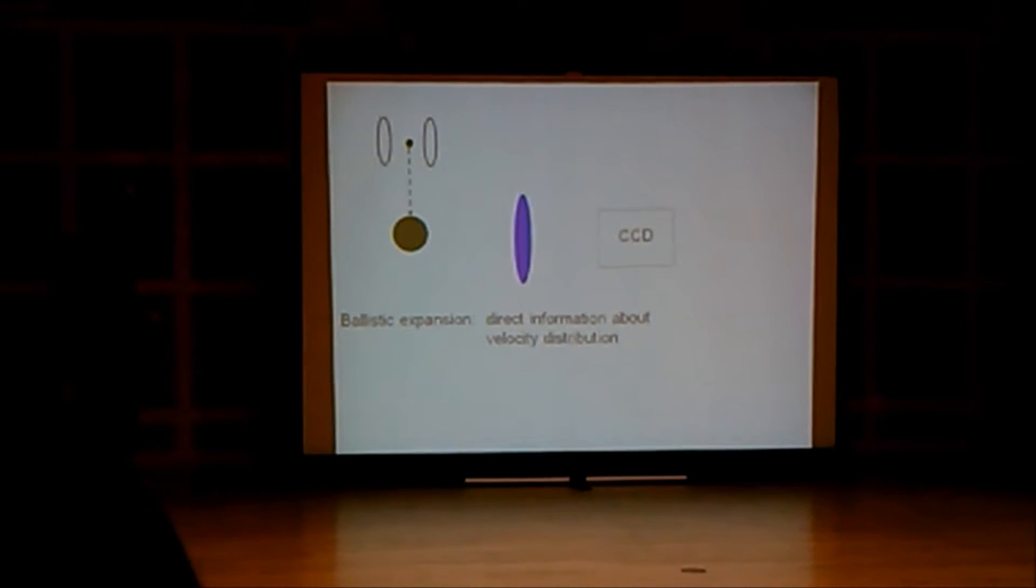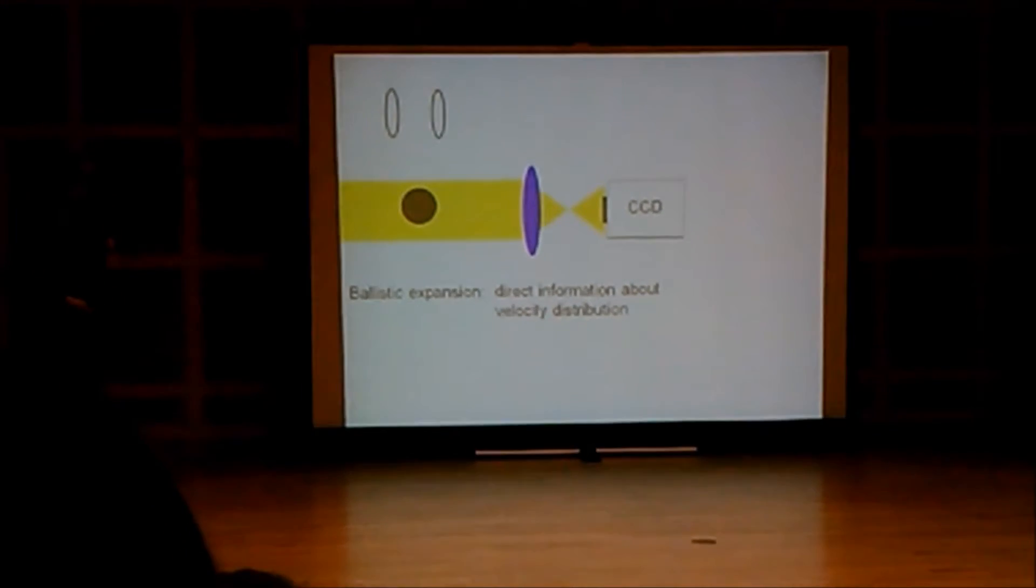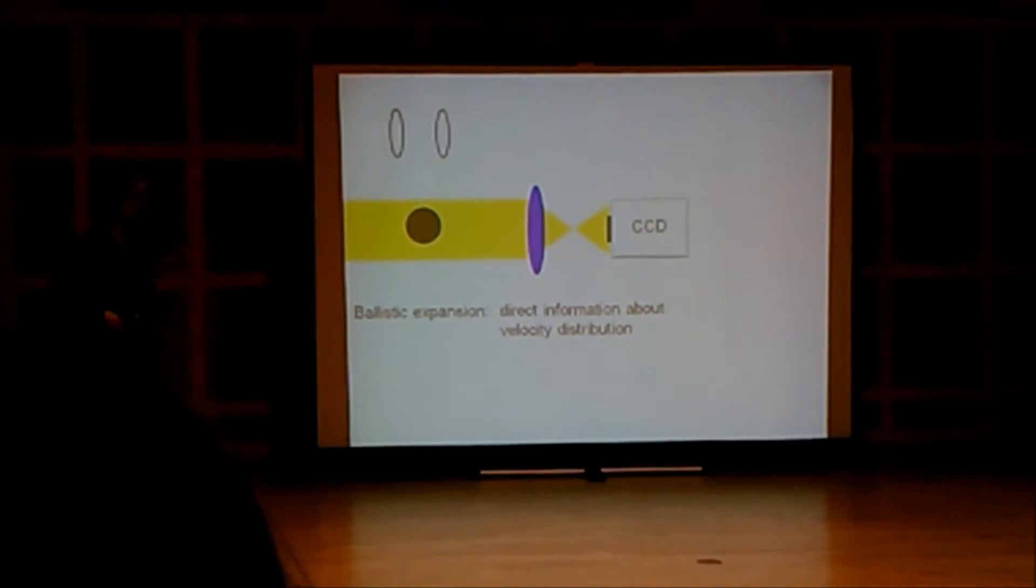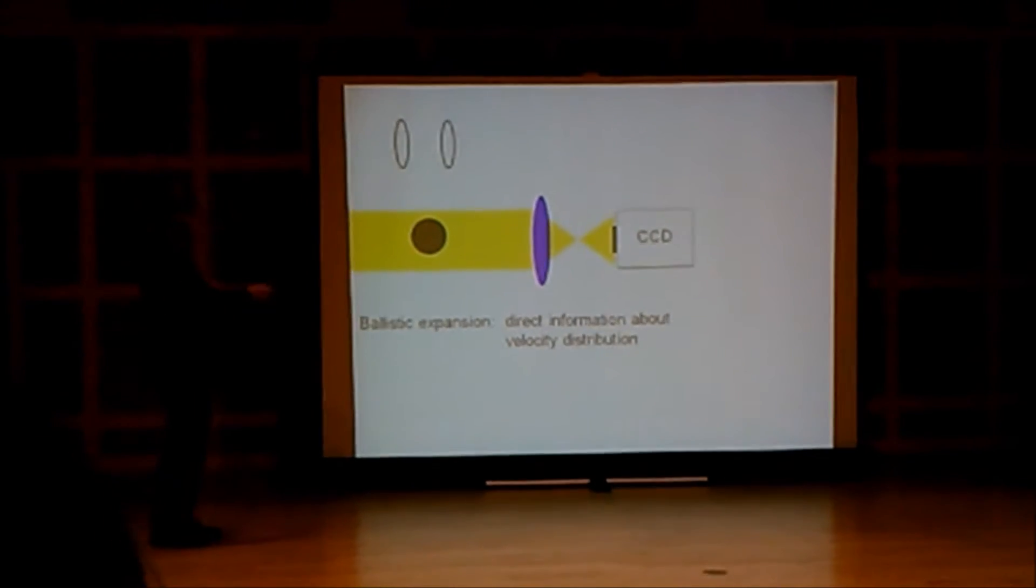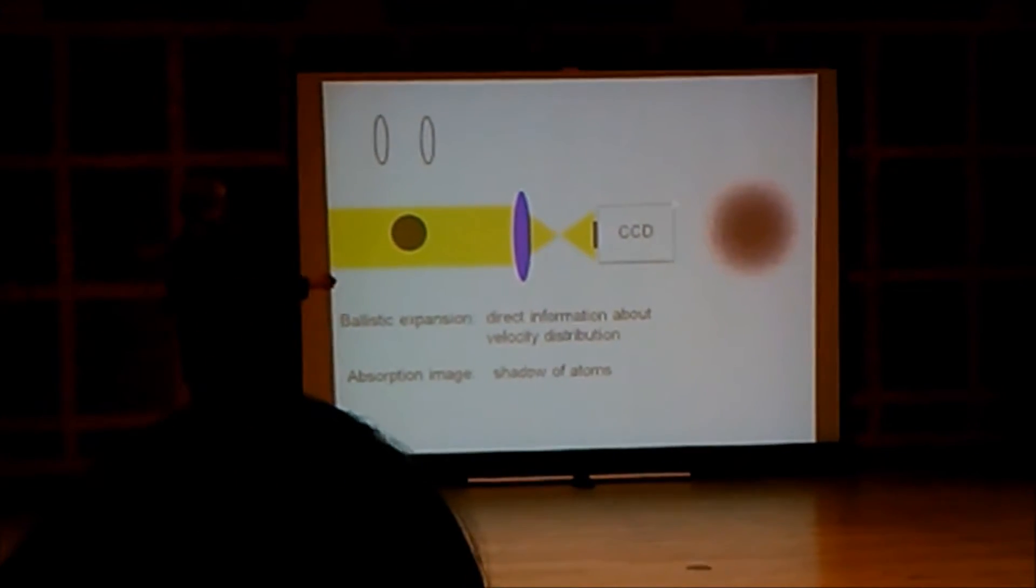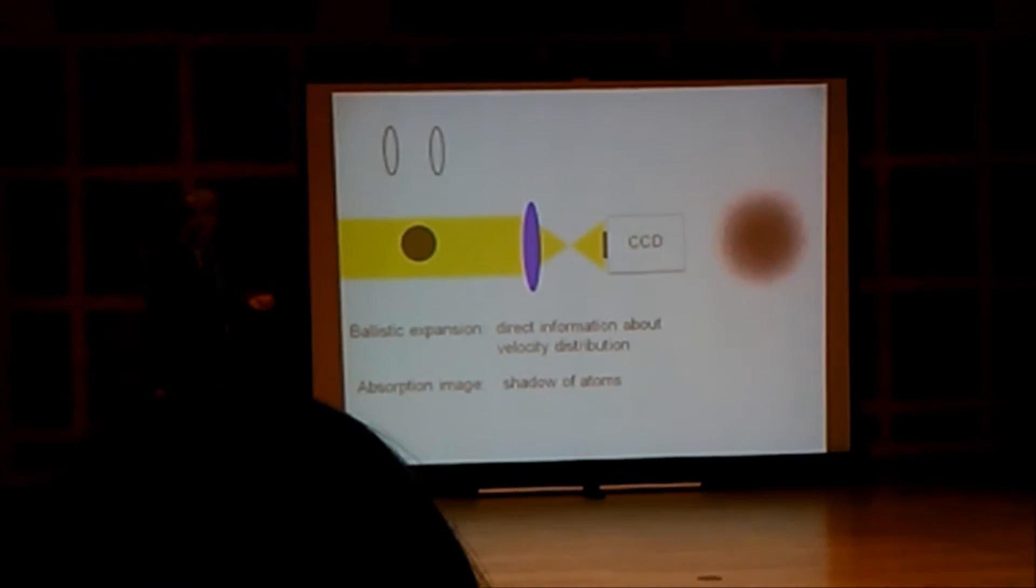We can look at the cloud with laser light. If we shine laser light on it, some of the laser light gets scattered or absorbed, and then the cloud casts a shadow. Most of what we know about those gases is obtained by just analyzing those shadow pictures.